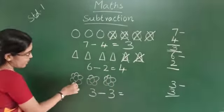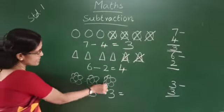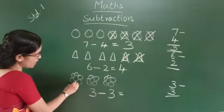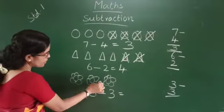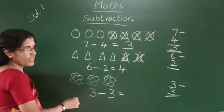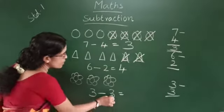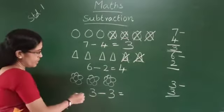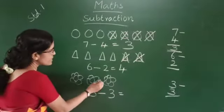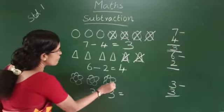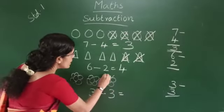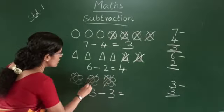Next step. How many flowers? 1, 2, 3. 3 minus 0. We cross out 0 flowers.